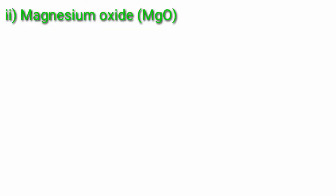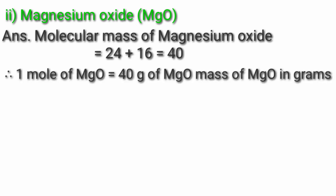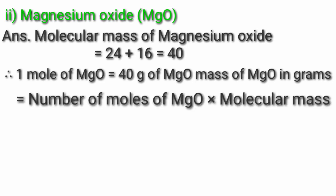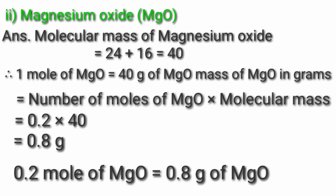Second, magnesium oxide, MgO. Molecular mass of magnesium oxide = 24 + 16 = 40. Therefore 1 mol of MgO = 40g. Mass of MgO = number of moles × molecular mass = 0.2 × 40 = 8g. So 0.2 mol of MgO = 8g of MgO.